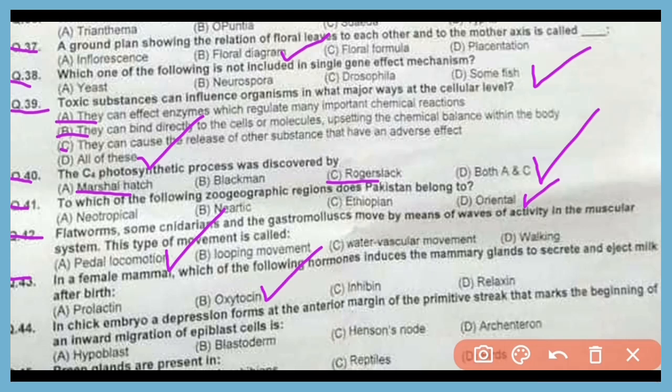Question 44. In chick embryo, a depression forms at the anterior margin of the primitive streak that marks the beginning of an inward migration of epiblast cells towards the hypoblast cells, known as Hensen's node. The correct answer is option C.